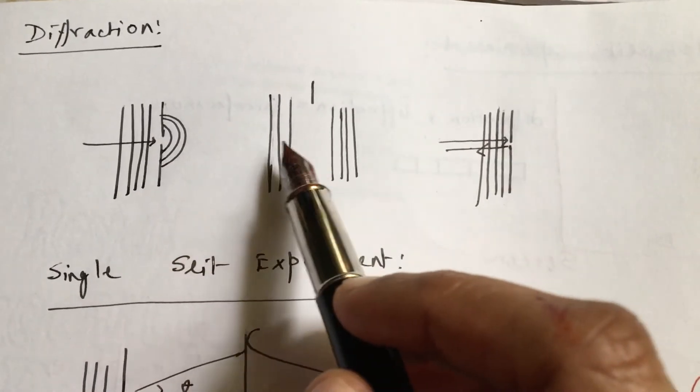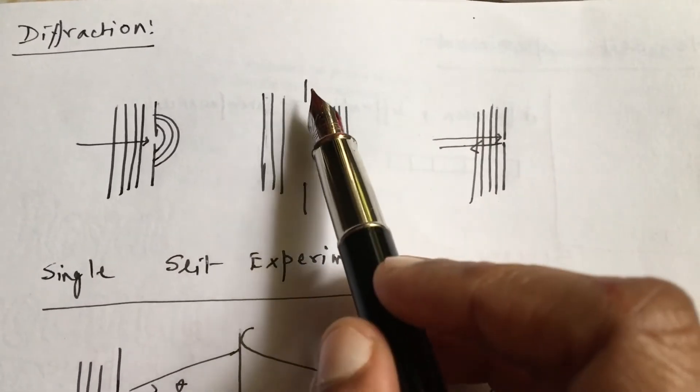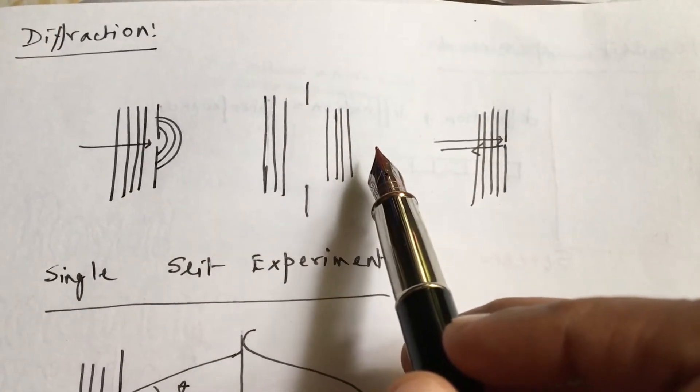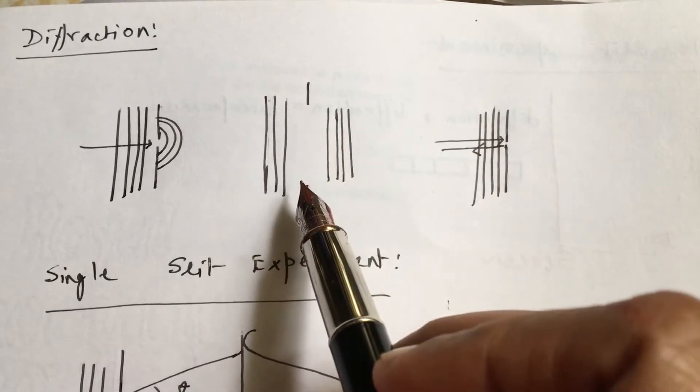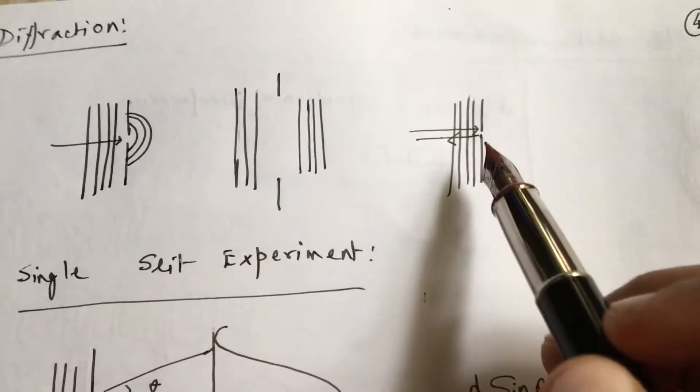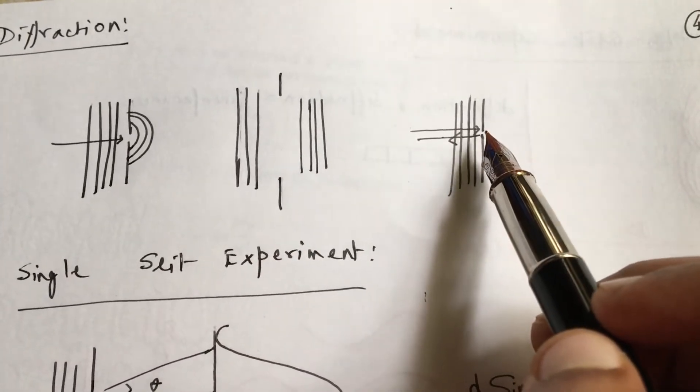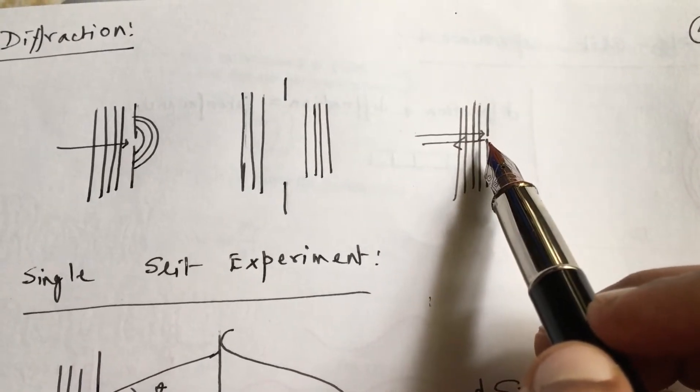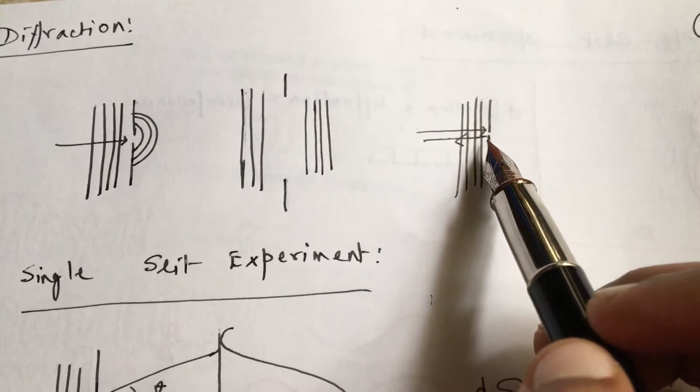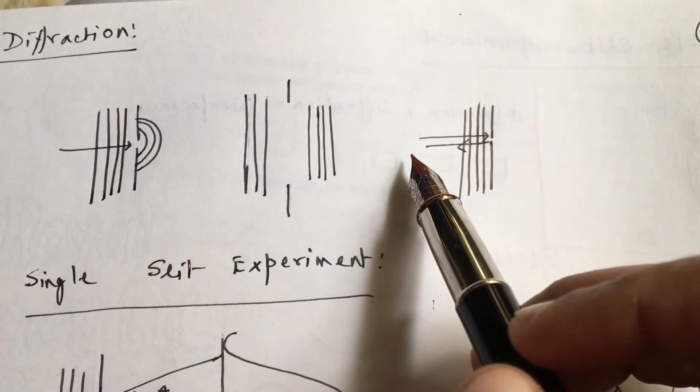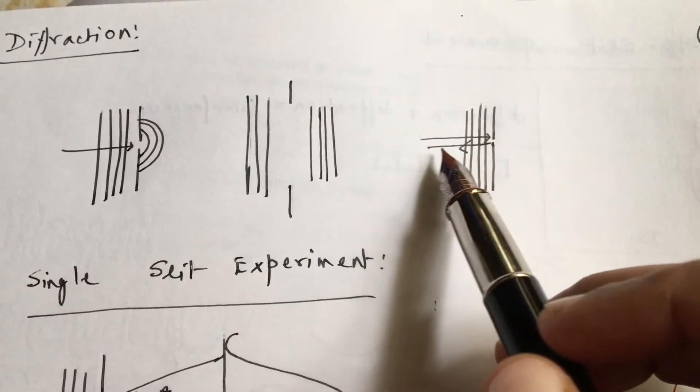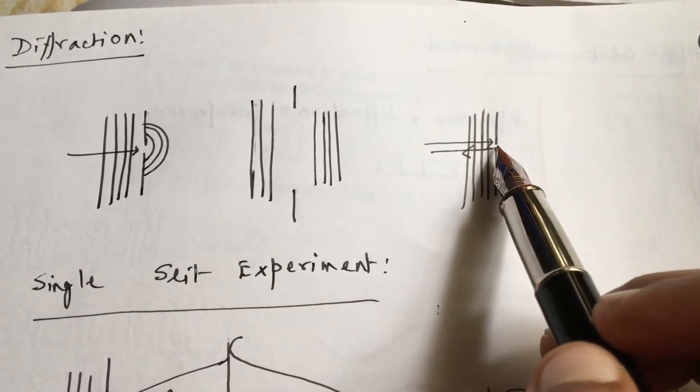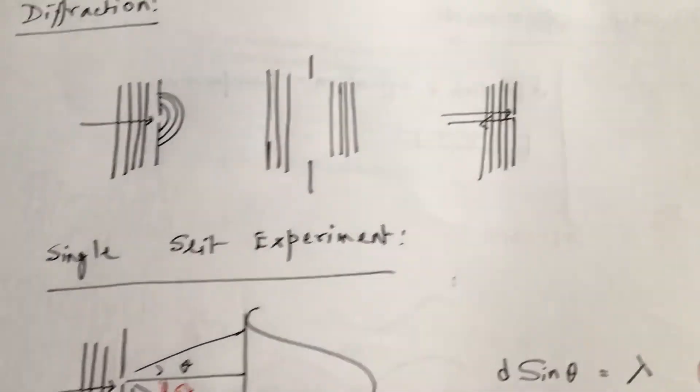Now what if the slit width is very large? If the gap is very large, the waves will just come along and reflect back. If this slit width is so small, the waves will just get obstructed here and reflect back.